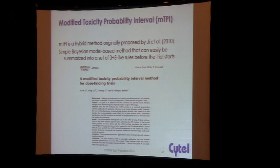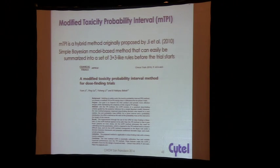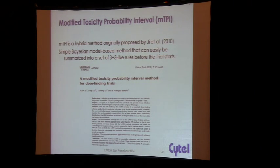I've just presented the model-based method. The Bayesian Logistic Regression Model is heavily in use at Novartis and many other companies. There is a whole other camp using the modified toxicity probability interval, proposed by Ji et al. in 2010 — a kind of hybrid method that started at MD Anderson. It's a nice compromise between rule-based and fully Bayesian methods.